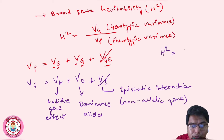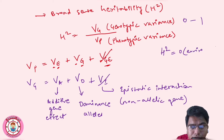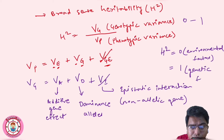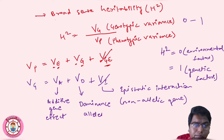The values of heritability range from 0 to 1. A value of 0 means environmental factors are contributing much to the phenotype, while a heritability of 1 means genetic factors are contributing much for the phenotype. This is about broad sense heritability.